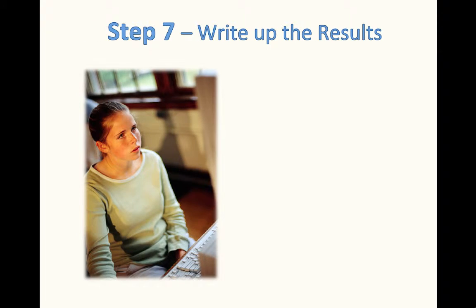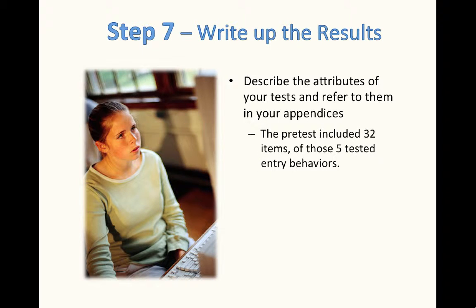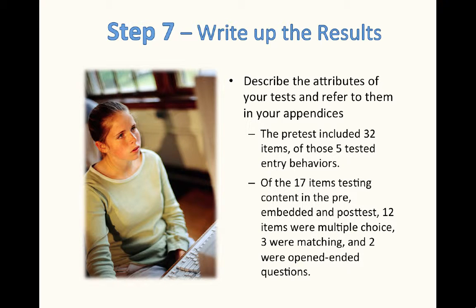Step 7: Now it's time to write up the results. First, you want to describe the attributes of your test and refer to them in your appendices. For example, the pre-test included 32 items of those five tested entry behaviors. Or, of the 17 items testing content in the pre-embedded and post-test, 12 items were multiple choice, 3 were matching, and 2 were open-ended questions.